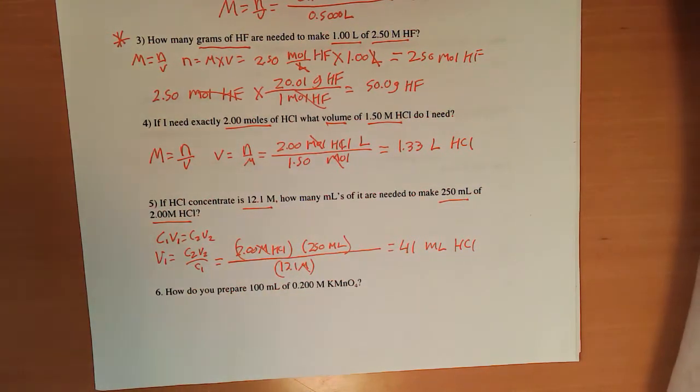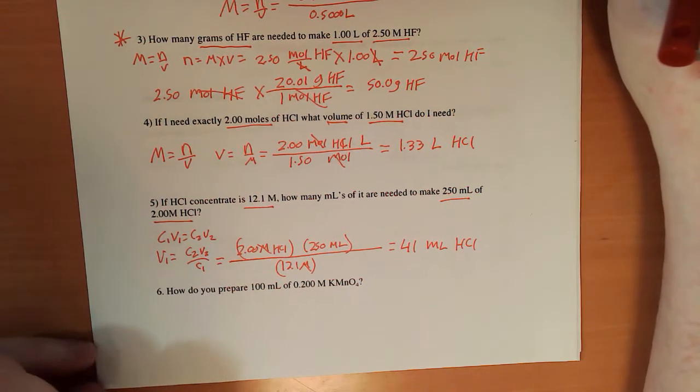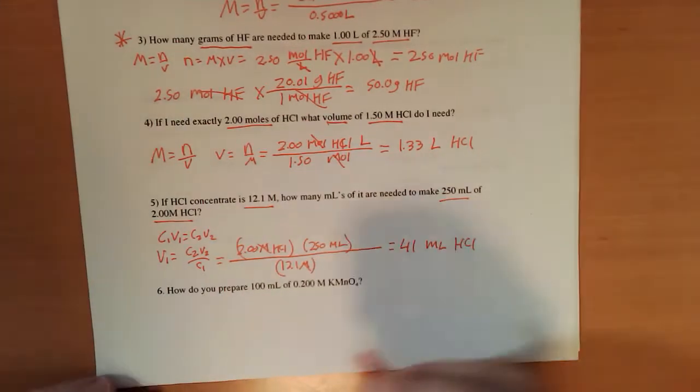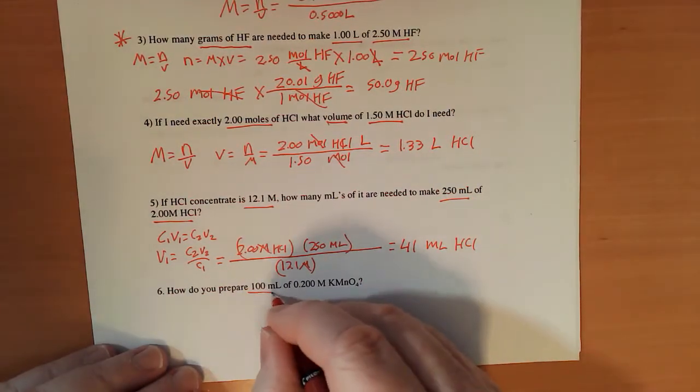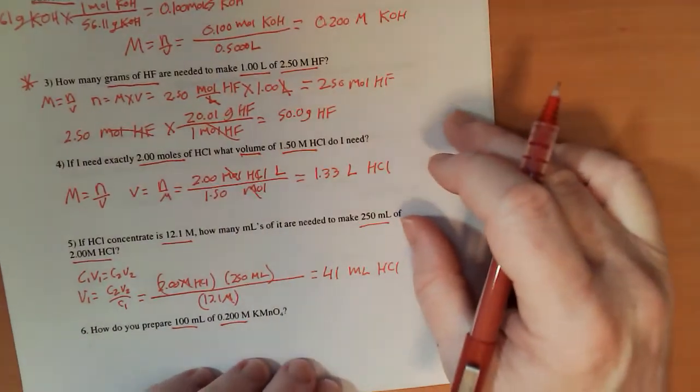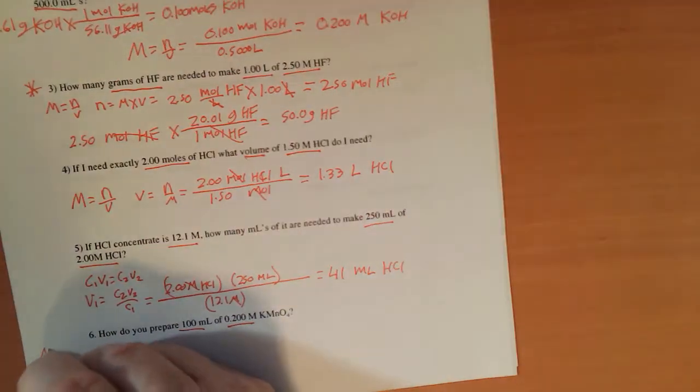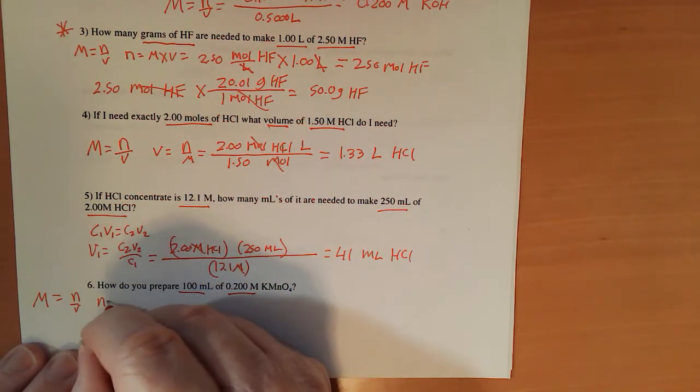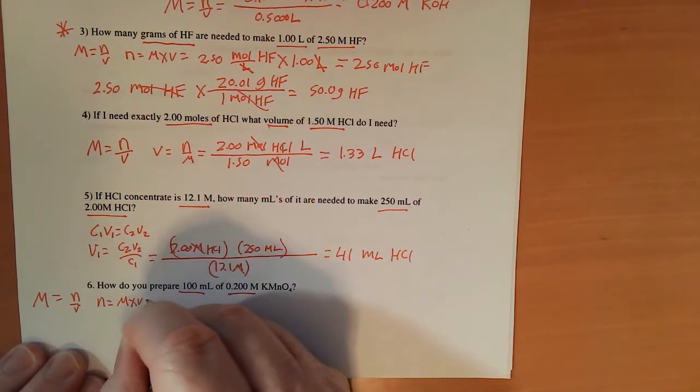Now number six is really a laboratory-based question, so it's an explanation. First off, we need to do the math. If I got 100 milliliters and 0.2 molar KMnO4, let's find out how many grams that would be. So molarity equals moles over volume, moles equals molarity times volume.